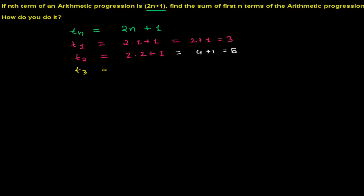Here t3, I mean to say the third term, it will be 2 times 3 plus 1, and it will be 6 plus 1, that is 7. In this way you can go because this is your nth term.